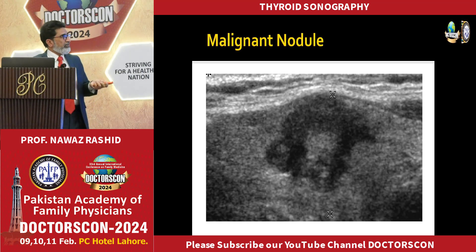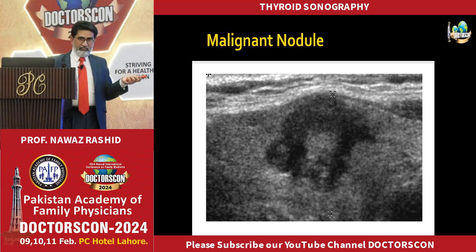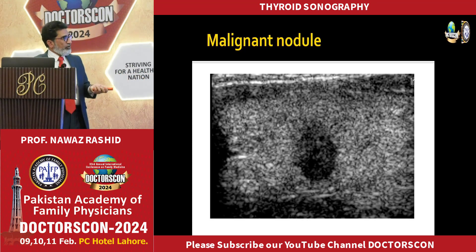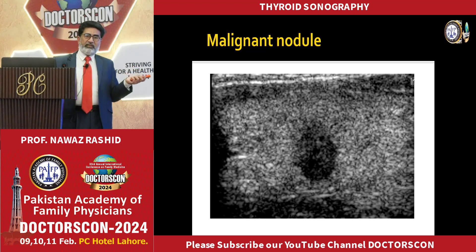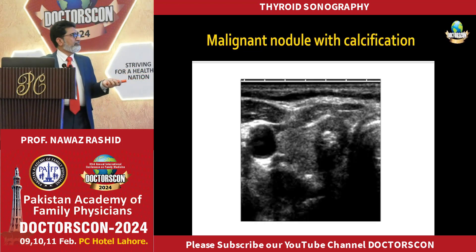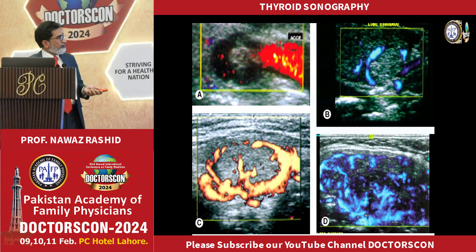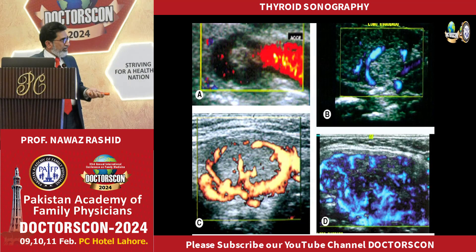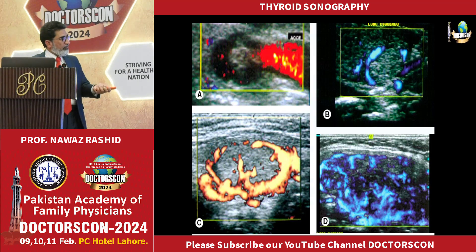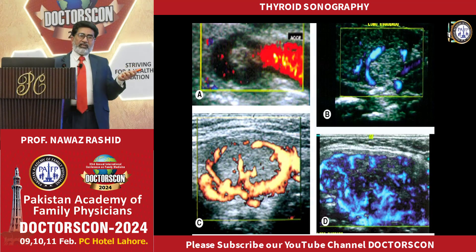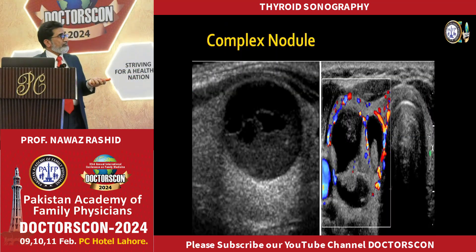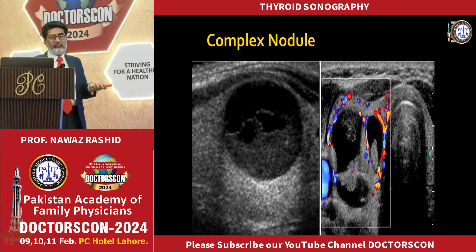This is a malignant nodule. Look at the margins — they are irregular. A malignant nodule shows peripheral and intranodular blood flow. You can see how much flow is inside and at the periphery — if you see this pattern, you have to think about malignancy. This is a complex nodule with a cystic component, solid area, and blood flow both inside and outside — this is also malignant.